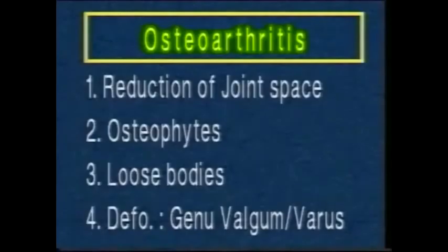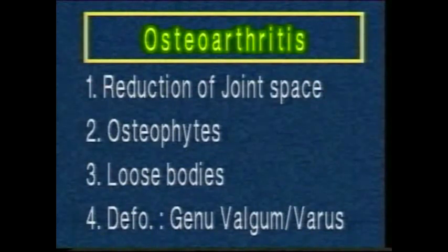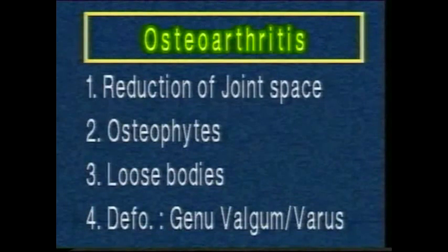So the radiological features of osteoarthritis of the knee are: a reduction in the joint space due to cartilage destruction, more on the medial side; osteophyte formation in the tibia, less commonly the femur and patella; formation of radio-opaque loose bodies in the joint; and deformity, more commonly genu valgum.